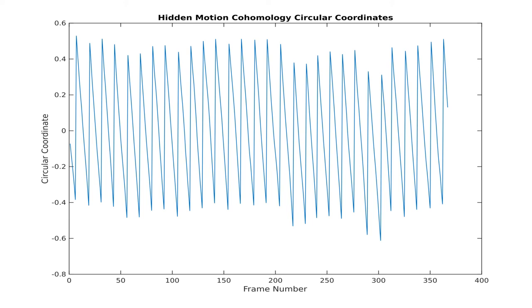Based on the frame rate of 25 frames per second and the observation that the circular coordinates are picking up on twice the heartbeat, we estimate the average heart rate of this person to be between 61 and 62 beats per minute.